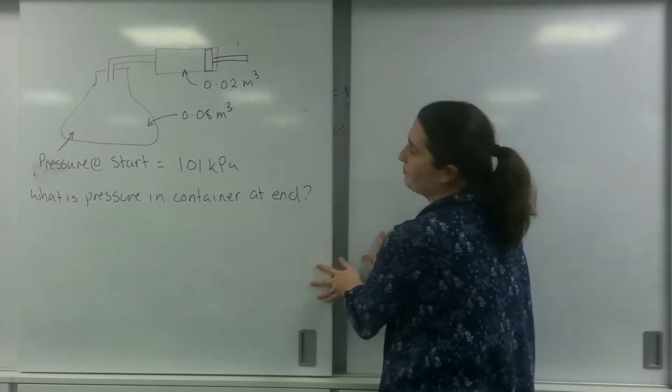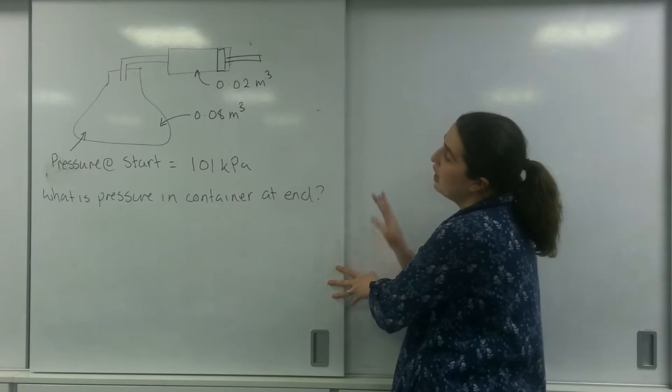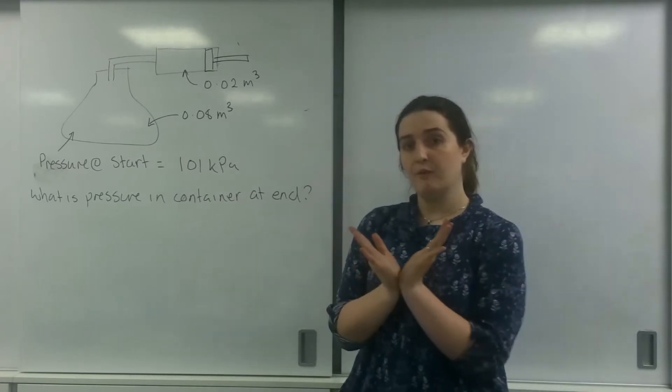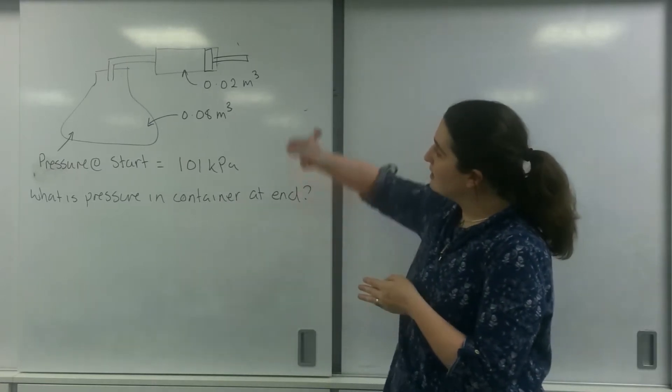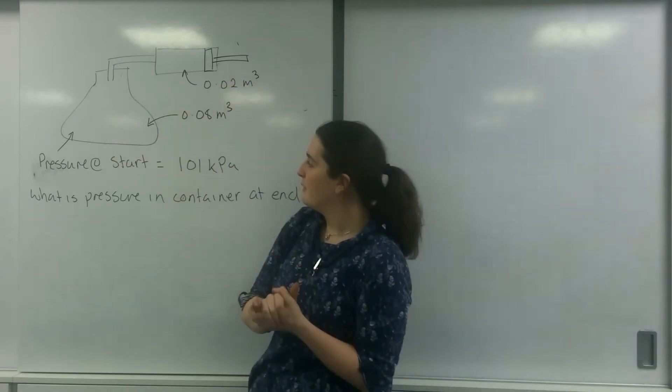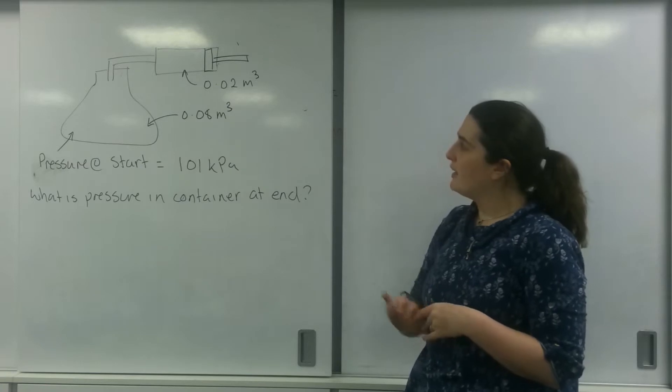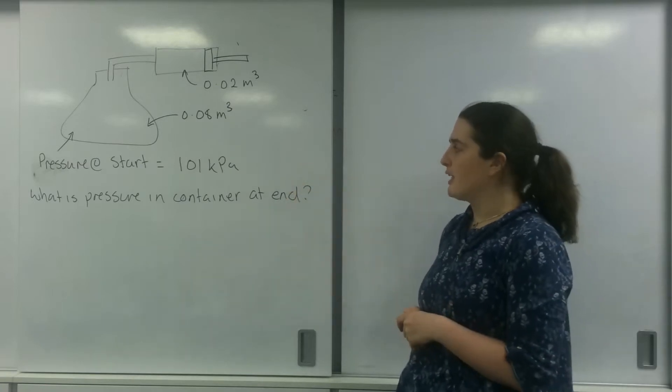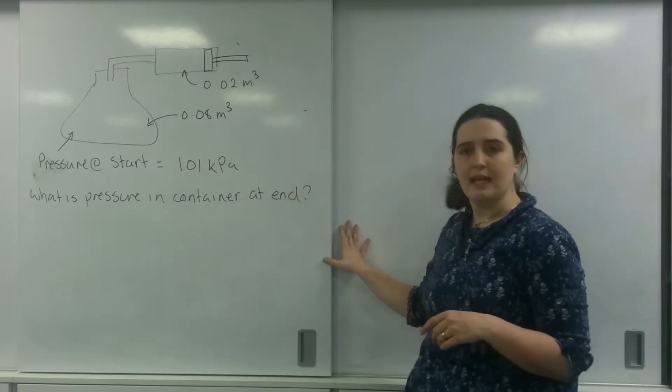So, this one. I have got a cylinder, a flask here, and I have got a syringe, and I'm pumping that gas in here into here. And the pressure at the start is 101 kilopascals. What is the pressure of the container at the end?